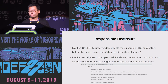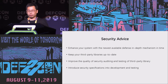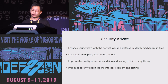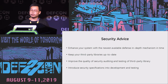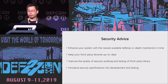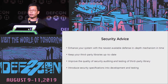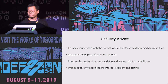For the DS (libcurl) timeline, these were quickly fixed and released by the libcurl team within two weeks. We also notified vendors to disable the vulnerable FTS3 of WebSQL in SQLite before the patch came out, if they don't use these features. We also notified Microsoft's security team about how to fix and mitigate the issue in some of their products. In summary: enhance your systems with the newest available defense mechanisms in a timely manner, keep third-party libraries up to date, improve the quality of security auditing and testing of third-party libraries, and introduce security specifications into development and testing. Thank you.